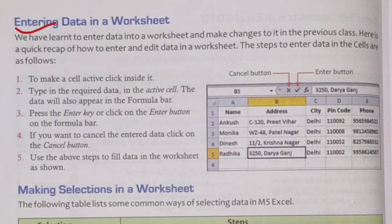The steps to enter data in the cells are as follows. To make a cell active, click inside it, then type the required data. The data will also appear in the formula bar. Press the Enter key or click on the Enter button on the formula bar to confirm the entry.